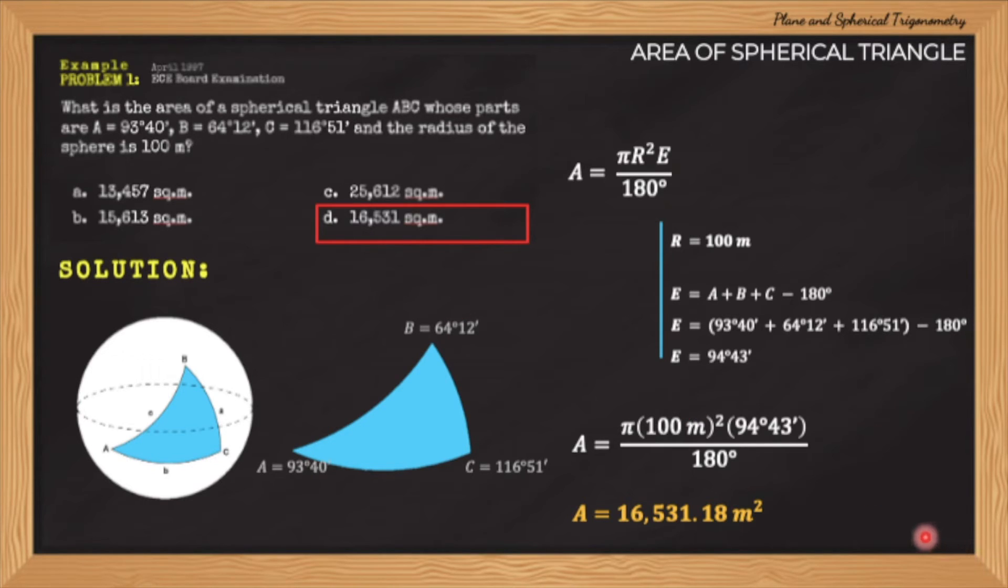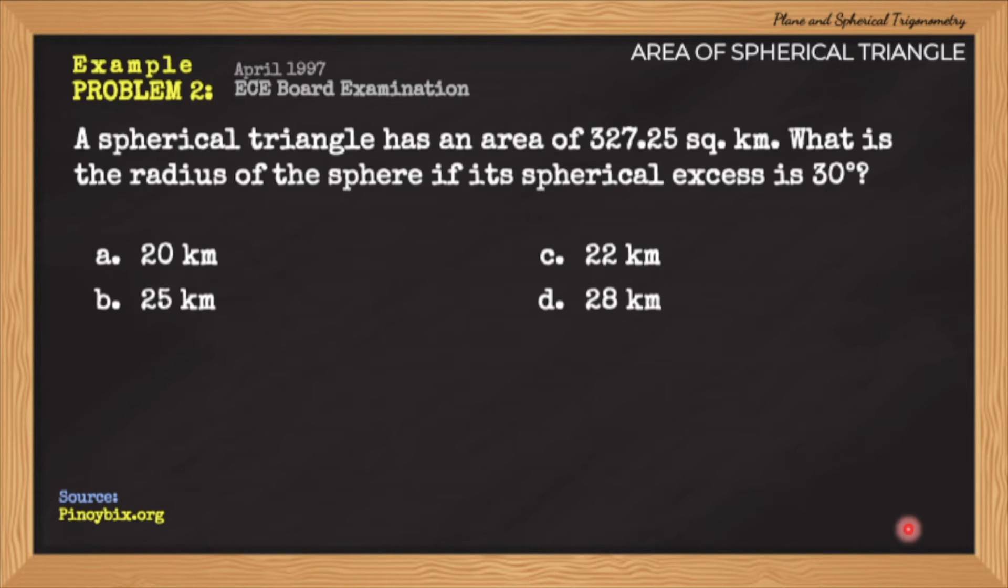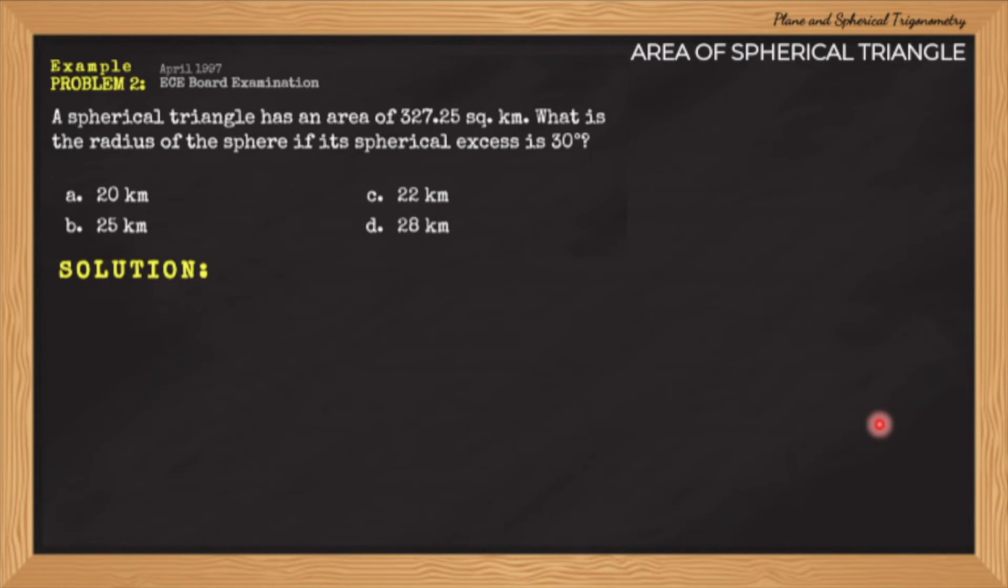Let us look at another problem. A spherical triangle has an area of 327.25 square kilometers. What is the radius of the sphere if its spherical excess is 30 degrees? This is relatively a simple problem to solve. We know that the formula for the area of a spherical triangle is pi R squared E divided by 180 degrees. We are given the value of the area in the problem, which is 327.25 square kilometers, and the spherical excess, which is 30 degrees.